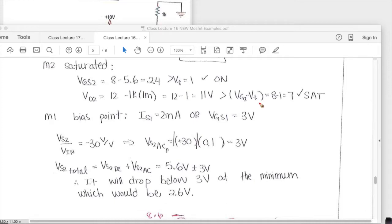For M1 it asks for the bias point and the bias point is either just the statement of what the IS value is or what the VGS value is.